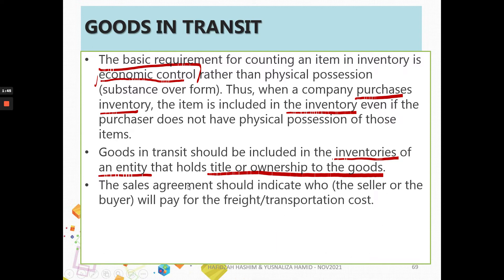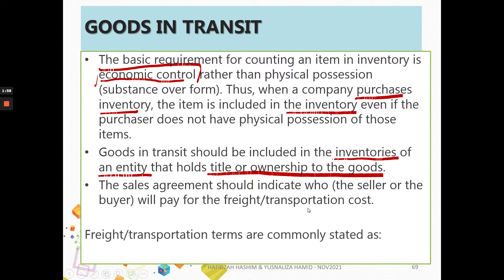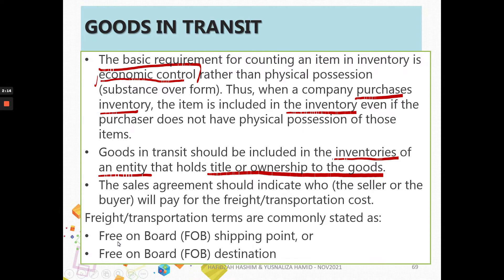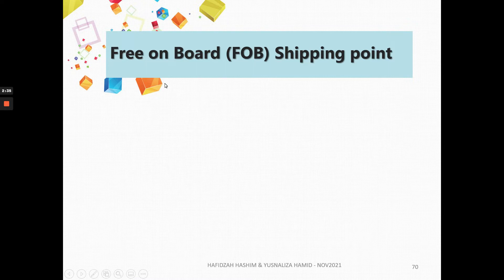Let's look at the sales agreement, which normally indicates who is the seller and who is the buyer, including the terms and conditions on who will pay for the freight and transportation costs. Our issue is to determine what happens if the goods in transit are free on board at the shipping point, or in the second situation, where the freight charges are stated as free on board destination. Who has control — the seller or the buyer? When does the transfer of ownership start? Let's look at the first one: free on board shipping point.